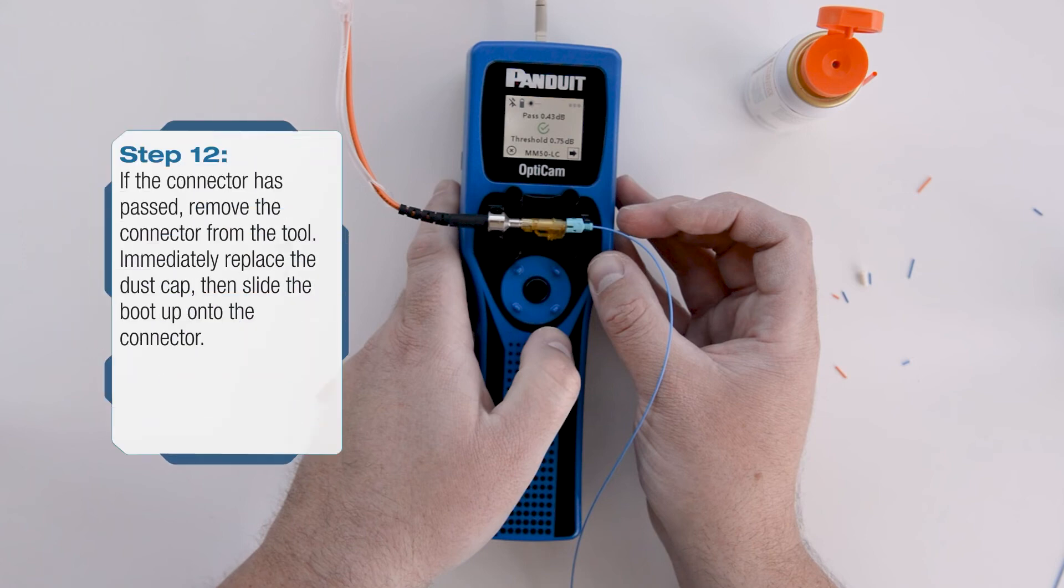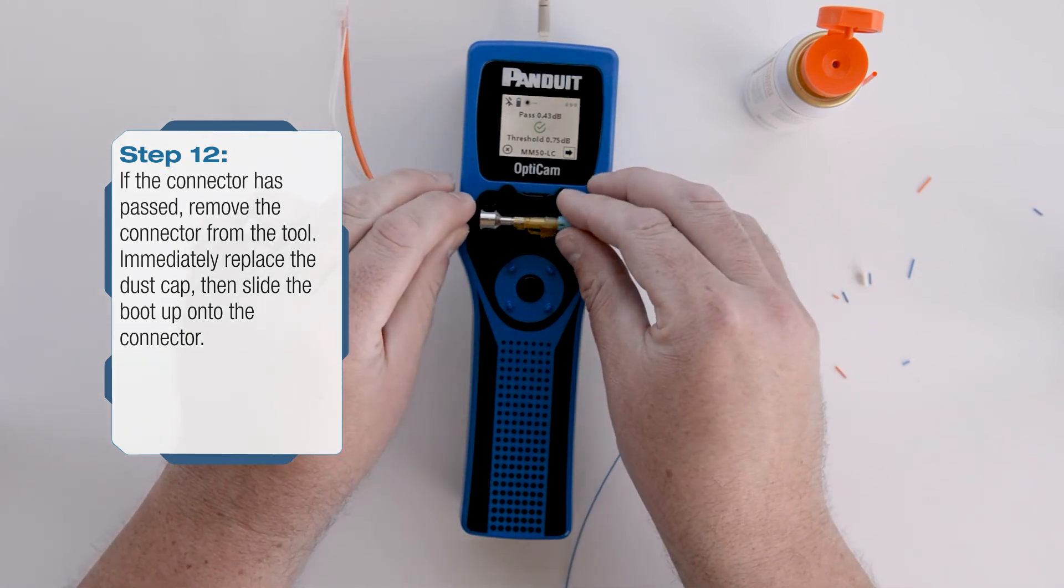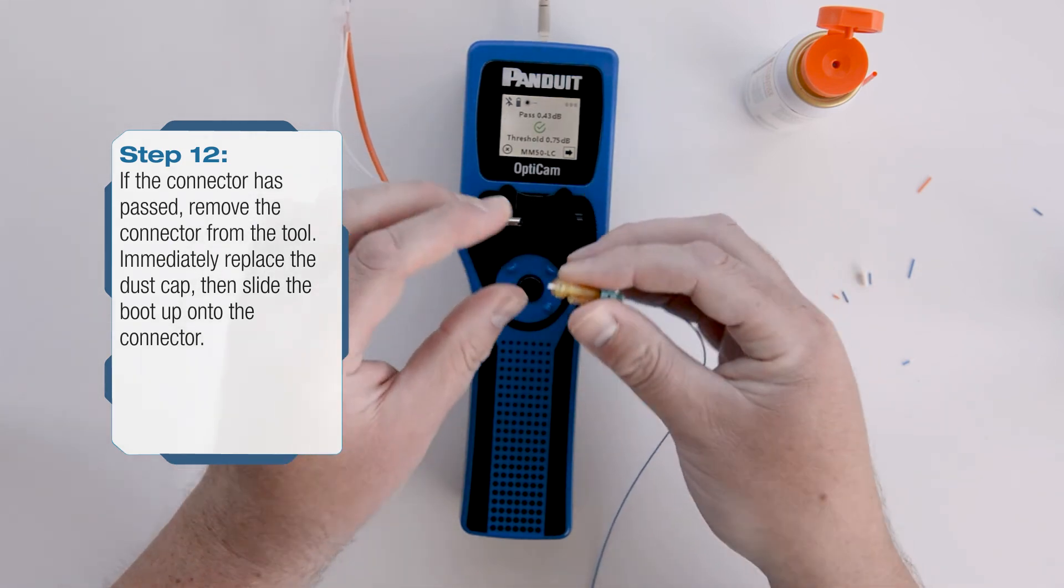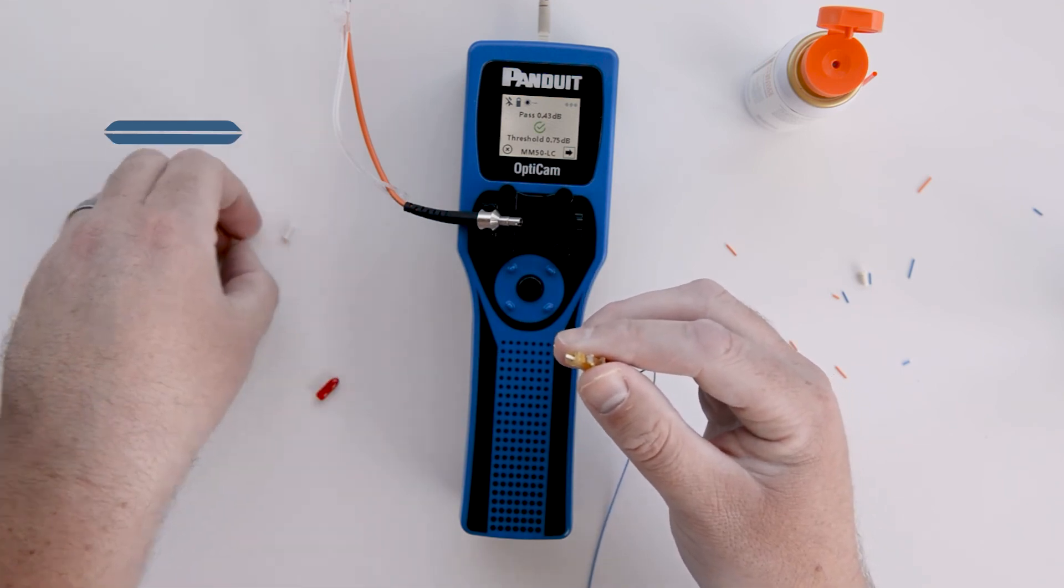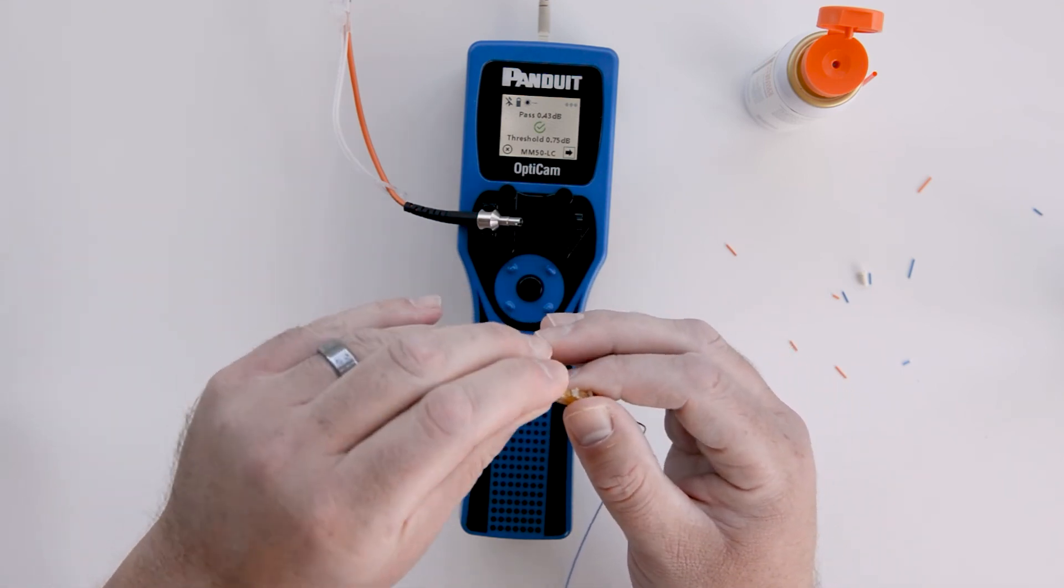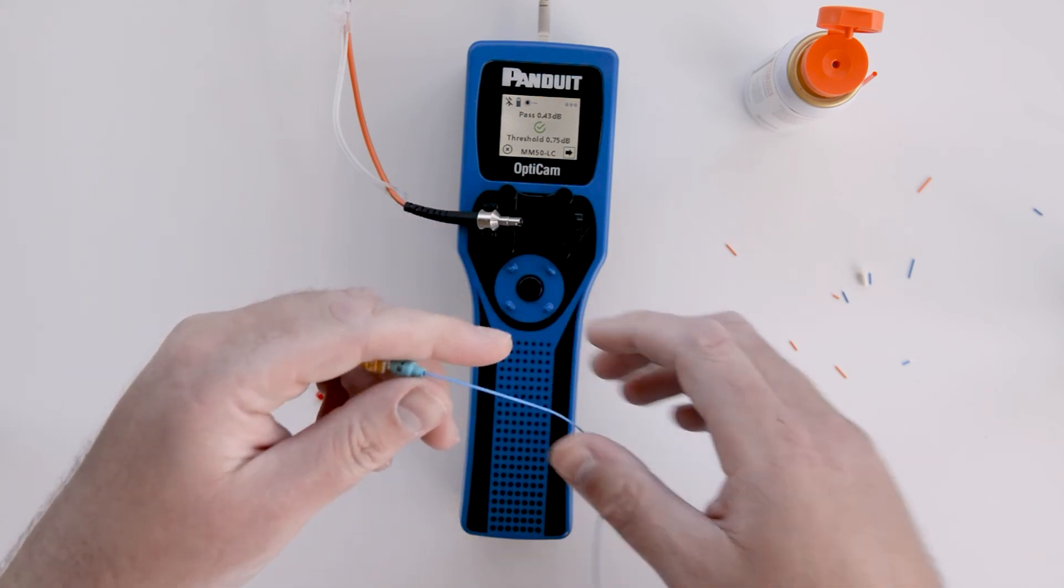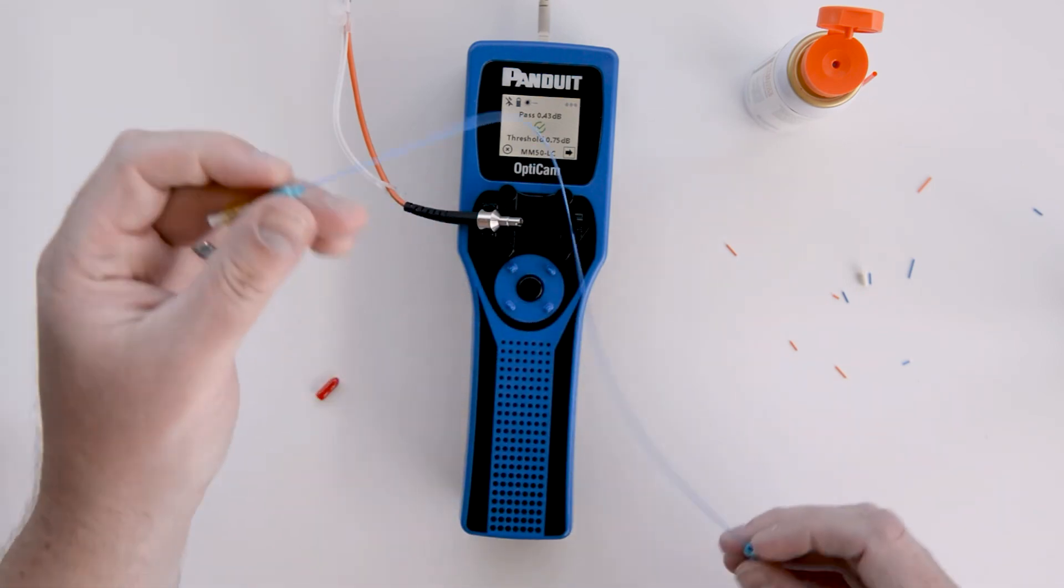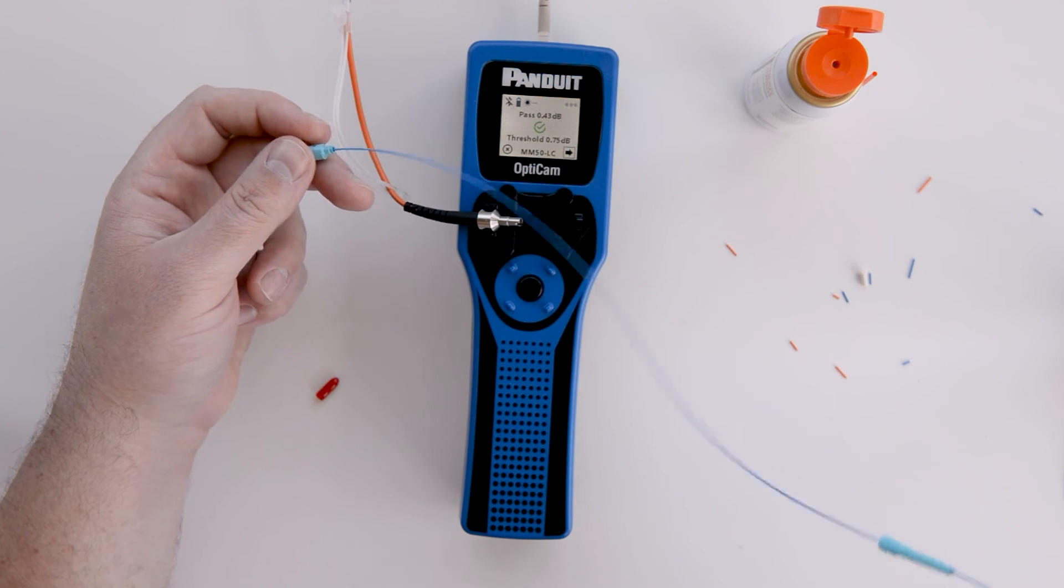If the connector has achieved a satisfactory result on the calculated insertion loss, remove the connector from the cradle and adapter by gently pulling up on the rear of the connector. Once the connector is removed from the tool, immediately replace the dust cap on the ferrule. Now slide the boot up onto the connector.